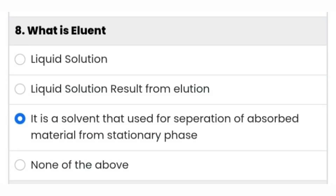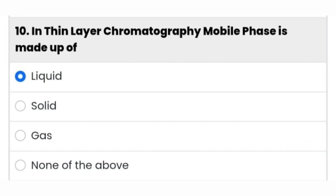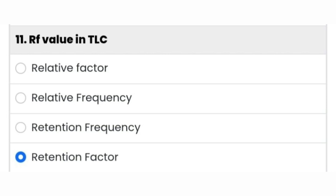The eighth question: what is eluant? It is a solvent that is used for separation of adsorbed material from the stationary phase. The ninth question: in thin layer chromatography, the stationary phase is made up of solid. In TLC, the mobile phase is made up of liquid. The RF value in TLC is the retention factor.